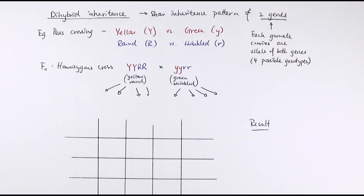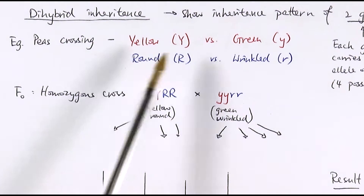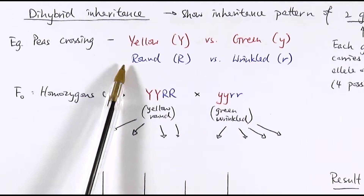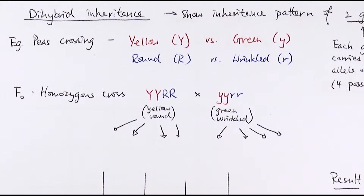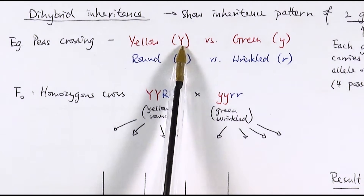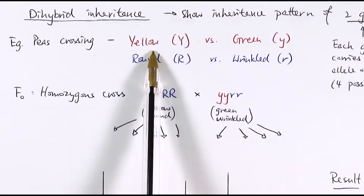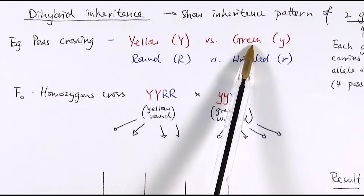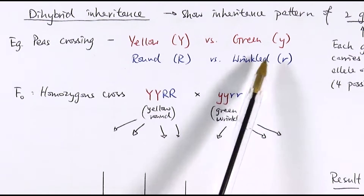The classic example you will always look at is Mendel's experiment, where he was crossing different types of peas. He noticed two particular traits: peas of different colours — either yellow or green — and peas with either a round shape or a wrinkled shape. From his experiment we know that the yellow allele is dominant over green, so capital Y for yellow and lowercase y for recessive green. Round is dominant over wrinkled, so capital R for round and lowercase r for wrinkled.